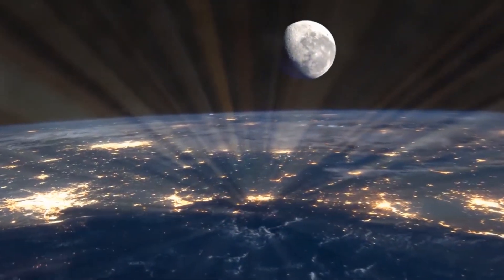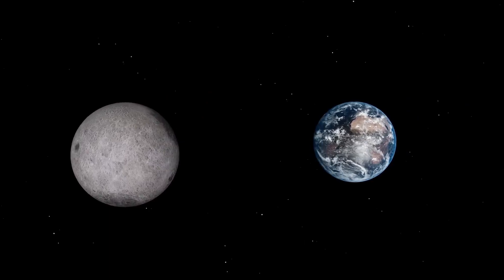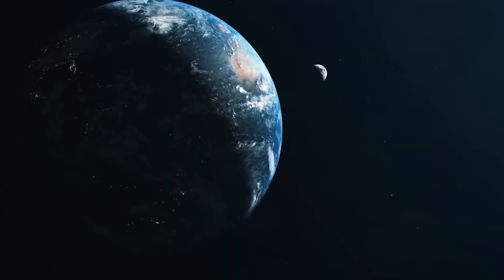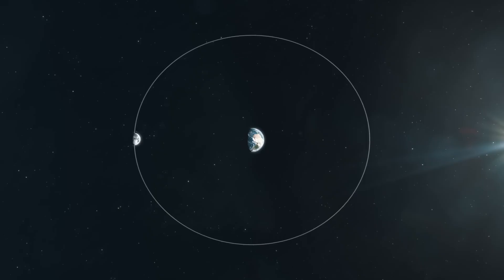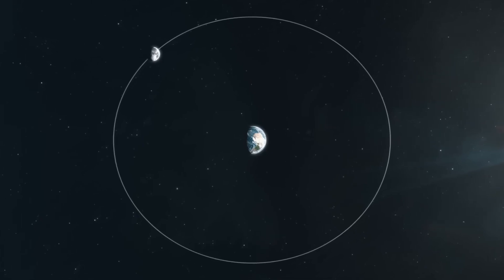In summary, the moon's gradual departure from Earth arises from the intricate interplay of gravitational forces and tidal influences between the two celestial bodies. However, it's important to note that this process unfolds over an extended time frame, spanning billions of years, and won't yield immediate consequences.